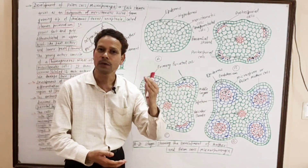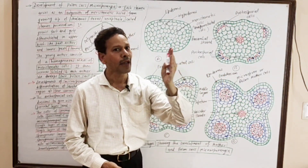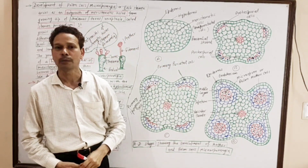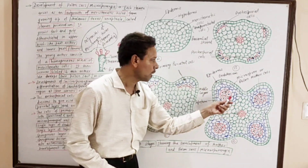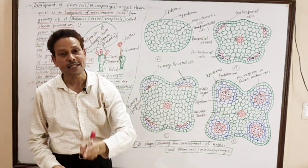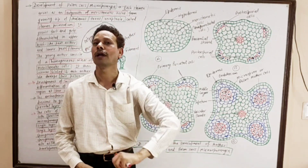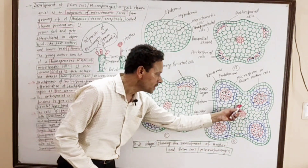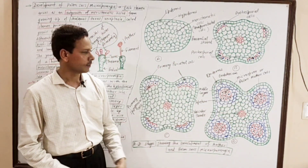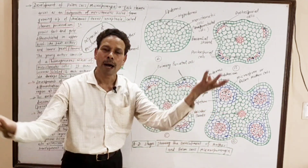This is all about development of stamen and development of anther. Each anther is tetrasporangiate, having four pollen chambers, four pollen sacs, or four microsporangia. Each microsporangium has two parts: the outer part is the wall, and the inner part is a mass of microspore or pollen mother cells. These cells are diploid. Each diploid pollen mother cell gives rise to a tetrad — meaning four pollens or four microspores are formed. In the central region, in the sterile connective tissue, a vascular bundle appears.